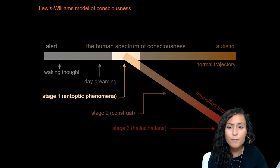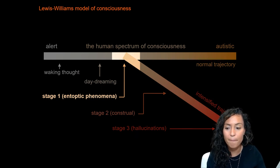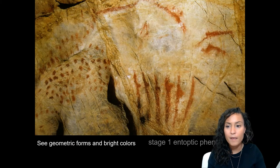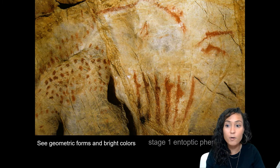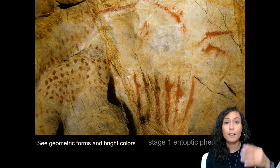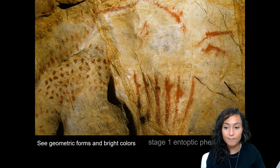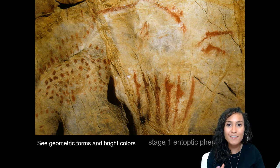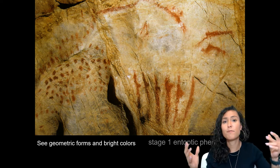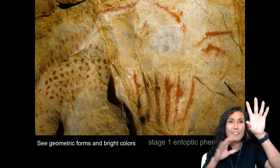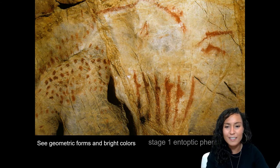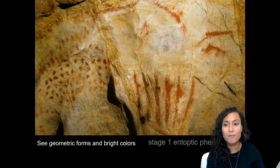Stage 1 is entoptic phenomena. Entoptic phenomena refer to the process of seeing geometric forms and bright colors, produced through light and oxygen deprivation. Many of you may have entered this state if you try to stand up really quickly after sitting down and see bright lights or little stars — that's the beginning of entoptic phenomena.